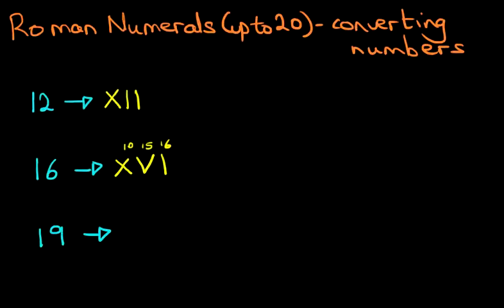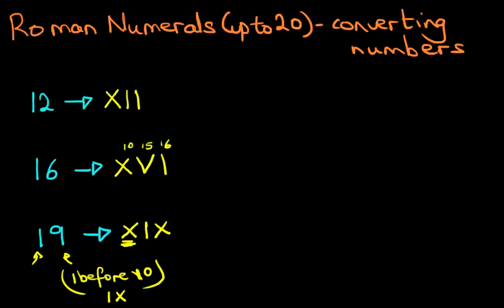Well first, we take care of the 10. So we write down X. Now how about the 9? How do we write 9? Well, 9 is 1 before 10. How do we write 1 before 10? That's simple, the answer is IX, it is 1 before 10. So we write X, IX. This X means 10, this means 9. Therefore that is 19.